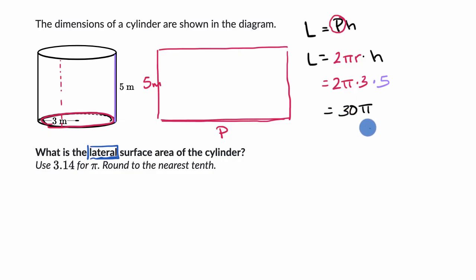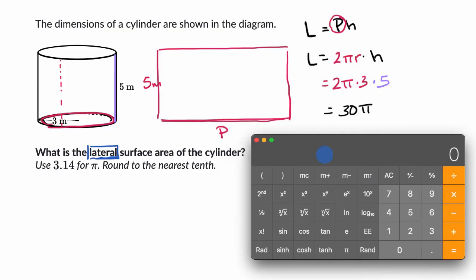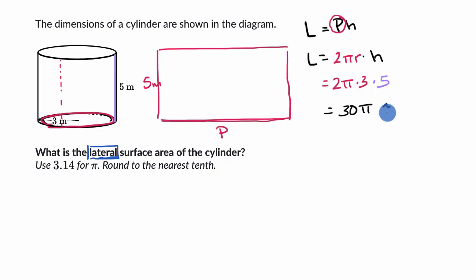which is the answer, but it looks like they want us to have a number without writing something times pi, so I could get a calculator out. And my calculator has a pi button on it, but they want us to use 3.14 for pi. So let me just do 30 times 3.14, which is equal to, and they want us to round to the nearest tenth. I didn't even have to round here, 94.2.